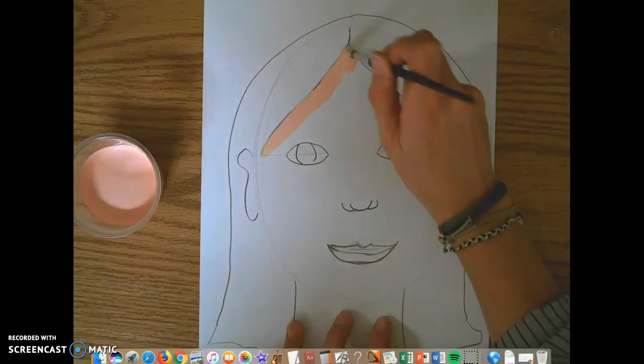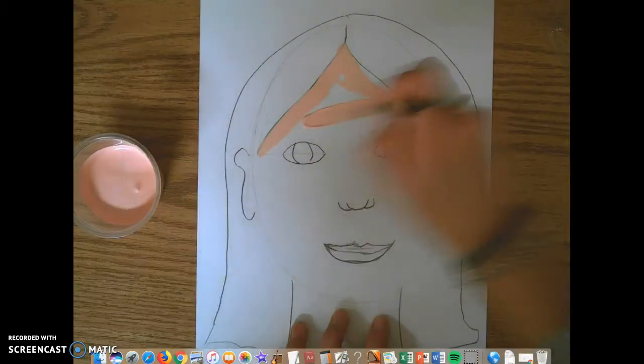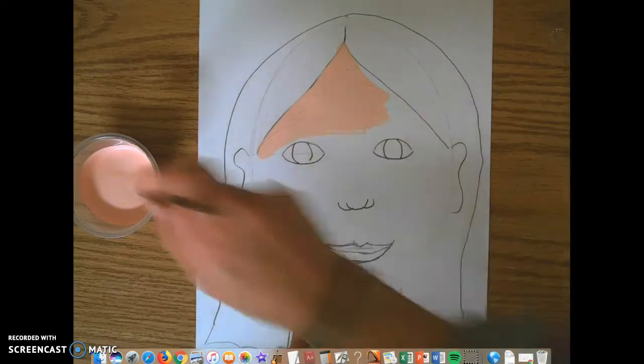So I'm painting along my hairline. I'm going to paint my forehead. Now I already drew in a nose, but I'm actually going to be painting right over the top of the nose because my nose is the same color as my skin.